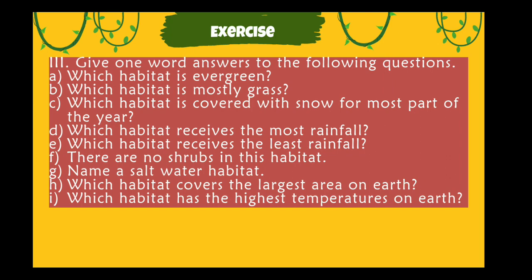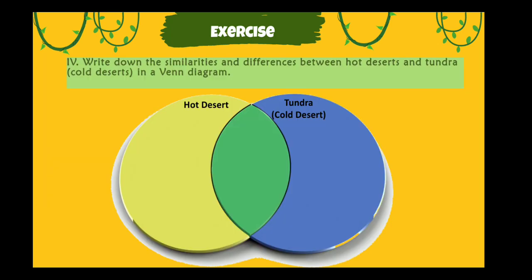Which habitat is mostly grassy? Which habitat is covered with snow for most part of the year? Which habitat receives the most rainfall? Which habitat receives the least rainfall and has no shrubs? Name a saltwater habitat. Which habitat covers the largest area on earth? Which habitat has the highest temperature on earth?